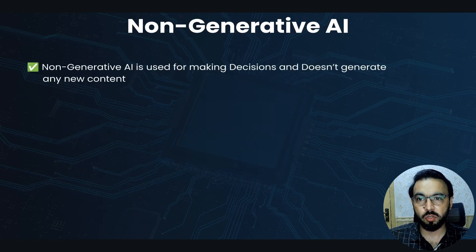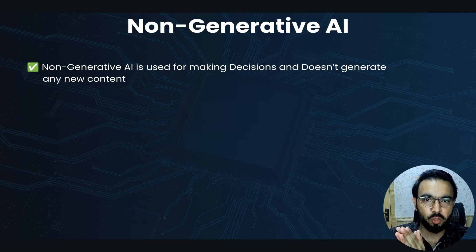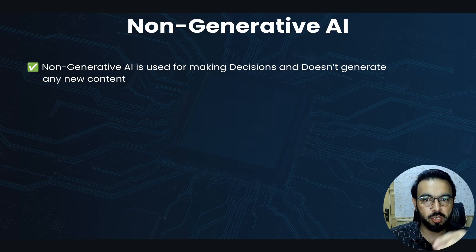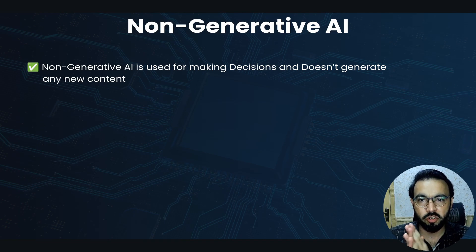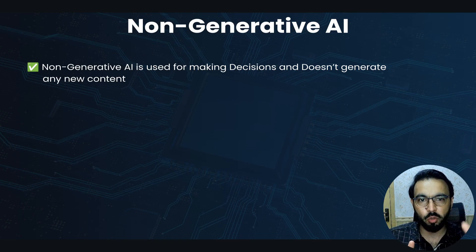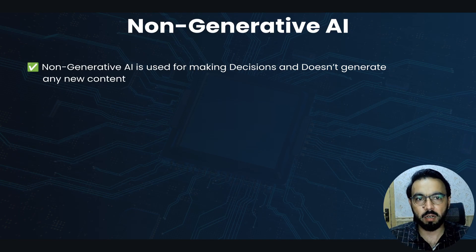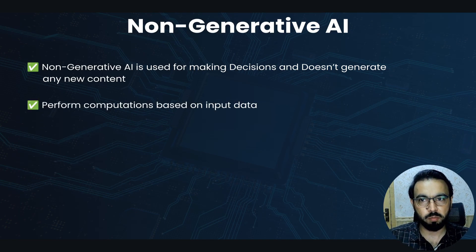Compared to generative AI, what is non-generative AI? Non-generative AI is used for making decisions and does not generate any new content. Generative AI takes an input and based on the training data it generates new content — text, image, video, or audio. Non-generative AI is a trained model but it makes decisions, performing computations based on the input data rather than generating new data.